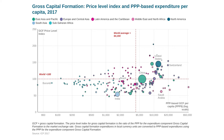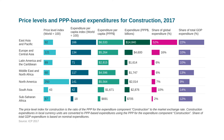Gross capital formation, or GCF for short, is a driver of economic growth, and policymakers looking at investment strategies can examine ICP price levels and expenditures on GCF, as shown in this chart for all countries. This chart shows the different indicators available from the ICP for construction, such as price levels, expenditures, per capita expenditures, share in global construction expenditures, and share in total GDP expenditures. Remember, these indicators are available for all published components of GDP, including food, housing, education, health, transportation, and others.